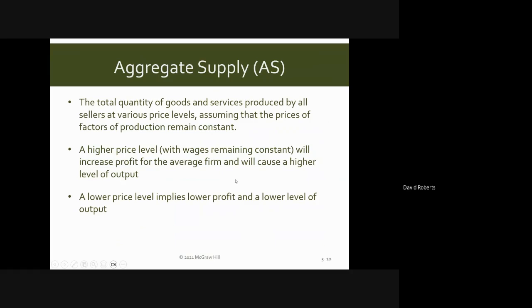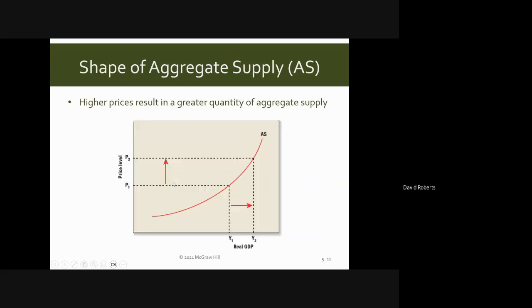Aggregate supply is the total quantity of goods and services produced by all sellers. We factor out price increases due to inflation. Inflation and low price levels imply lower profit and lower level of output. In the short run, higher prices will increase aggregate supply, going from Y1 to Y2.